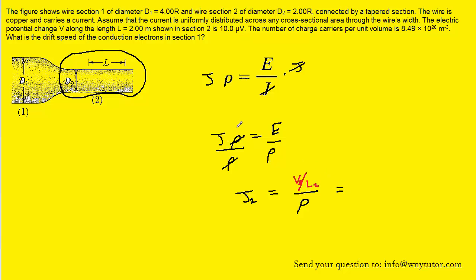The question gives us the potential difference in section 2 of the wire. They note that it is 10 microvolts. So we'll do 10 and convert it to the standard unit of volts by multiplying that by 10 to the minus 6. That gives the value in volts, and then we'll divide by the length of section 2 which is stated to be 2 meters.